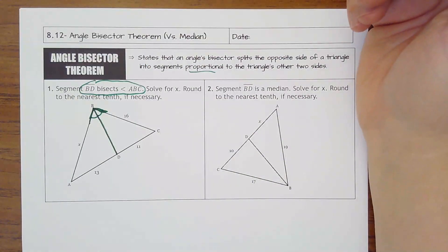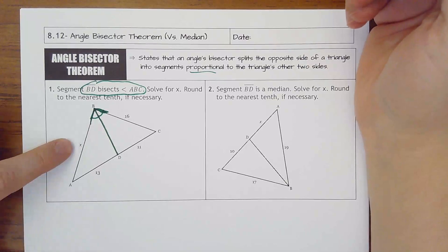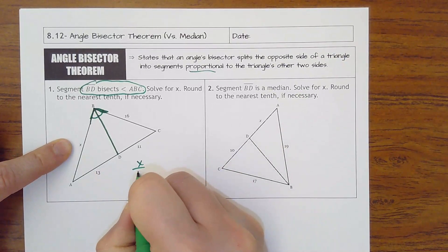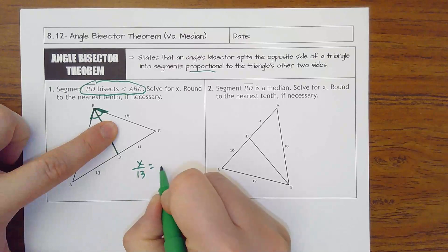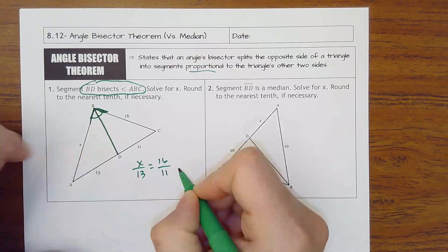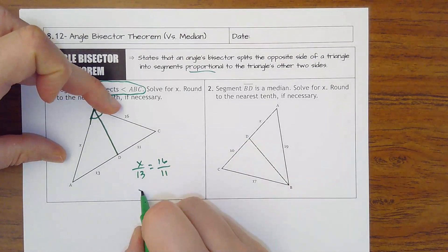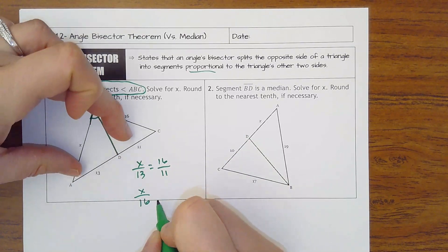What this theorem allows us to do is again create a proportion of its sides. You can do x to 13 as 16 is to 11. You could do x to 16 as 13 is to 11.